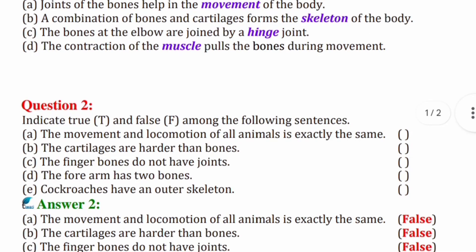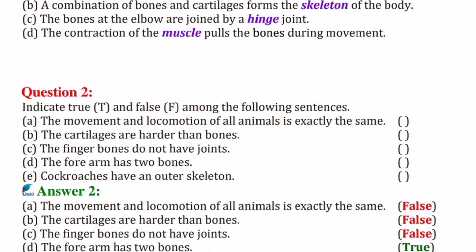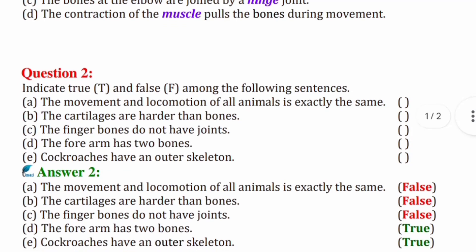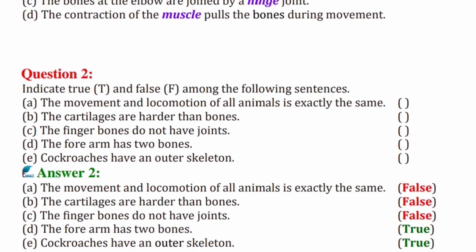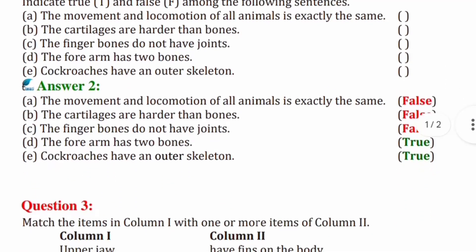(d) The forearm has two bones. Correct, the forearm has two bones. Next question: (e) Cockroaches have an outer skeleton. True, cockroaches have outer skeleton. Let's move to the next question.